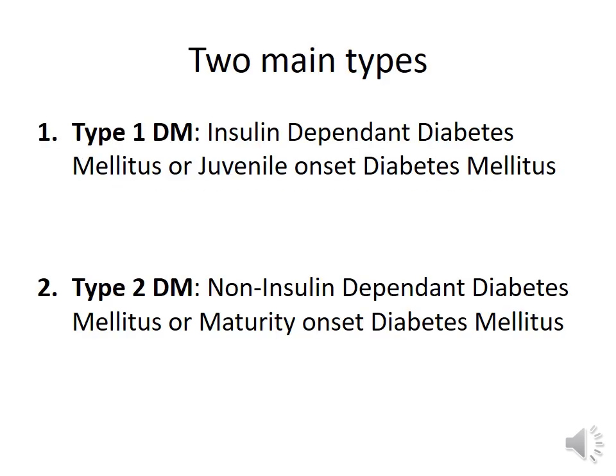Classification of diabetes mellitus: there are two main types — type 1 and type 2. Type 1 is also called insulin-dependent diabetes mellitus because the main treatment is giving insulin, as insulin secretion is very minimal due to damage to the beta cells. Another older terminology was juvenile onset diabetes mellitus, which is no longer used because type 1 diabetes has also been seen in older individuals.